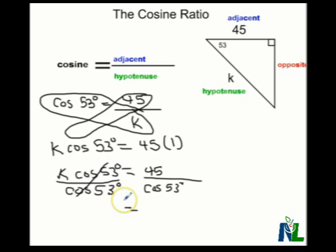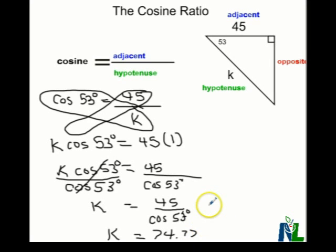The cosines of 53 on the left cancel out, which means we've isolated the variable. So K equals 45 divided by the cosine of 53 degrees. When we work that out using our calculator, we get 74.77 as the measurement of the hypotenuse in this case.